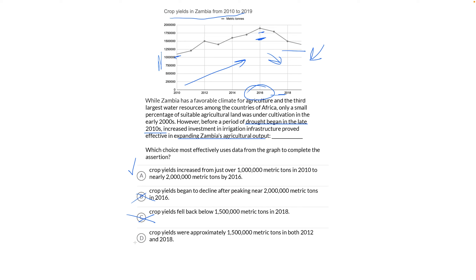Choice D: Crop yields were approximately 1,500,000 metric tons in both 2012 and 2018. Sure, the graph bears that out, but it's also not supportive of the pre-2016 improvement argument. So that means choice A is our answer. It's not enough for the choice to accurately reflect just any old piece of data in the graph — the answer must be accurate to the graph and support the argument. Good luck out there, you've got this.